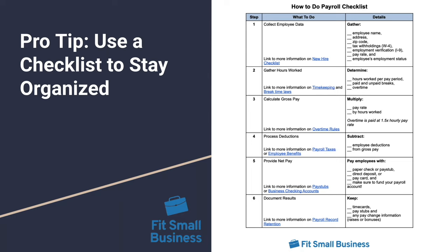Now that we've gone through the eight steps of processing payroll, a quick tip to leave you off with is to use a checklist to stay organized. A lot of the things we talked about throughout this video really require you to stay on top of the payroll process to make sure things are being done accurately and in a timely manner. This is actually a free small business payroll checklist that we've created that can keep you on track as you go through the payroll process.